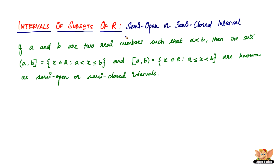A semi-open or semi-closed interval is a pretty simple concept. If A and B are two real numbers such that A is less than B, then the set written as open bracket A, B close square bracket equals the set of X belonging to R such that X is greater than A but less than or equal to B. The square bracket indicates that X can be equal to B, while the open bracket indicates that X will only be greater than A, not equal to it.